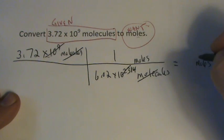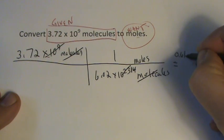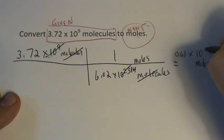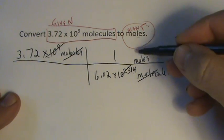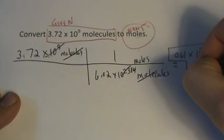So now I'm taking 3.72 divided by 6.02, which actually gives me 0.61. And I have to remember this times 10 to the 14th. But since it's below, it actually is 10 to the minus 14th. And this is moles. It's pretty small.